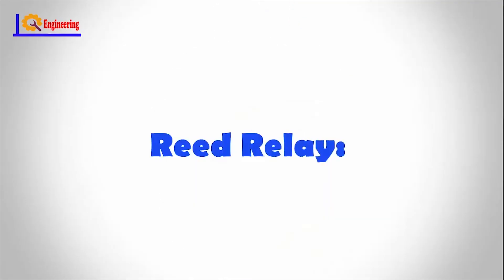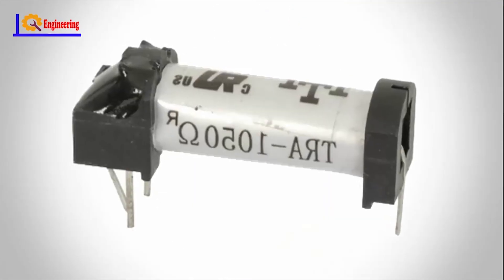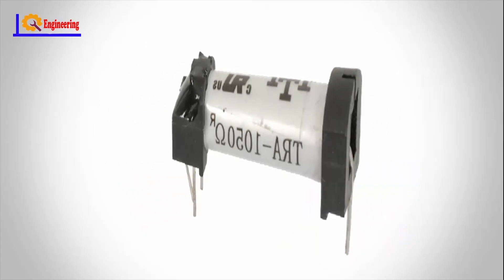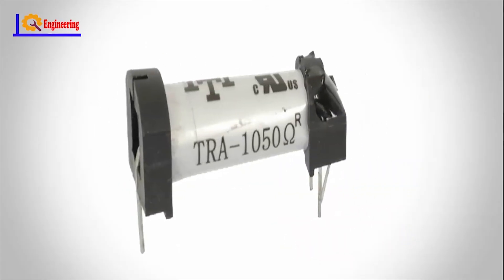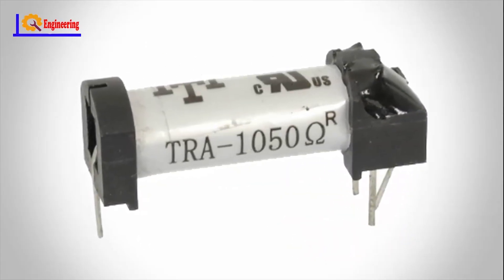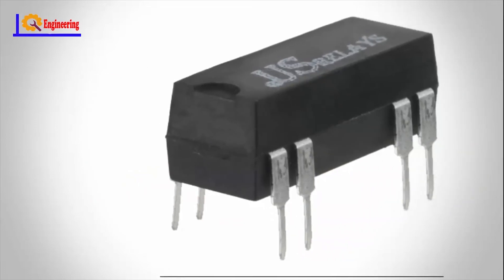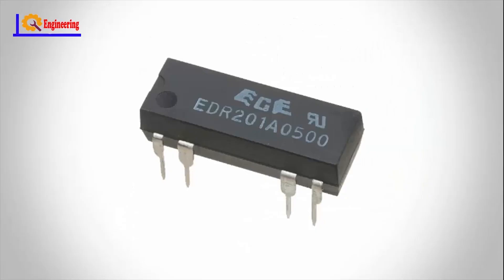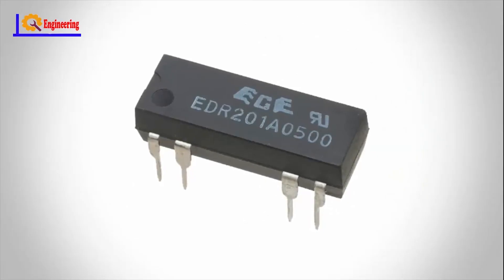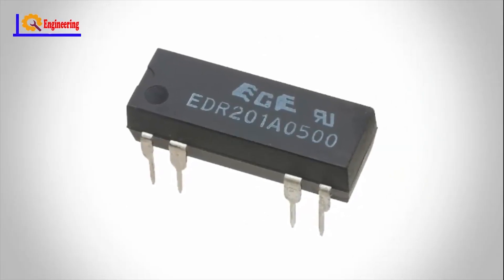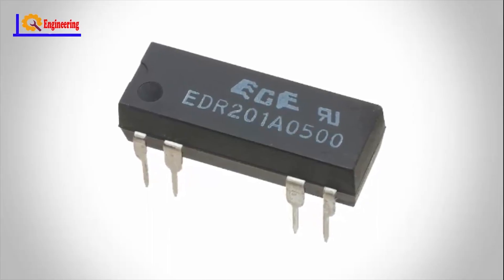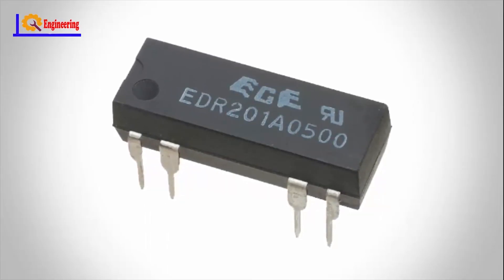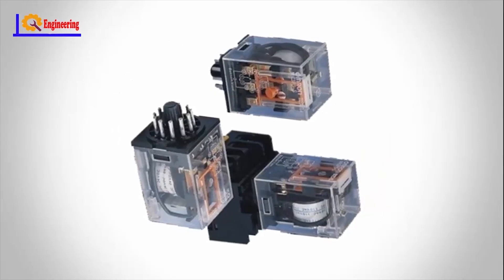Reed relays: reed relays consist of a pair of magnetic strips, also called reeds, that are sealed within a glass tube. This reed acts as both armature and contact blade. The magnetic field applied to the coil wrapped around this tube makes these reeds move so that switching operation is performed.